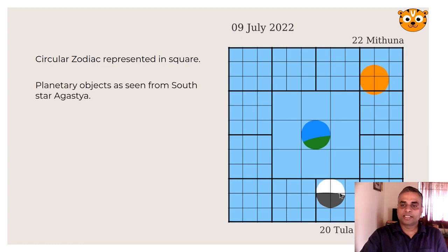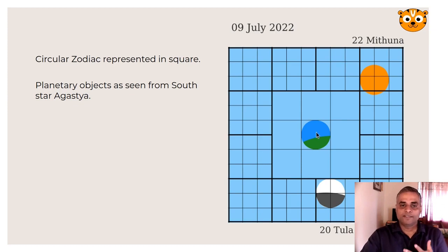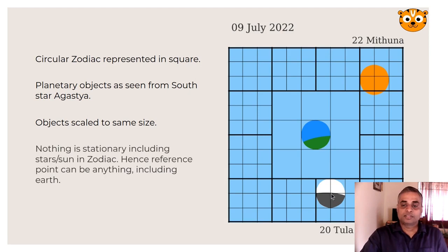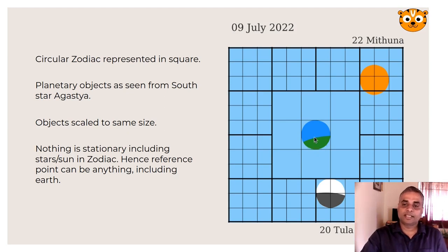These planetary objects — the Sun, Moon, Earth and other planets — are the observations as done from a star in the south. Let us assume that it is Agastya. As seen from Agastya, how would the various planets appear? The objects are scaled to the same size, because if we showed the Sun at full scale, the Moon would be just a dot. Since nothing is stationary, including the stars or the Sun in the zodiac, we can use Earth as a reference point — that is, we are looking at the relative positions of planetary objects with respect to Earth.